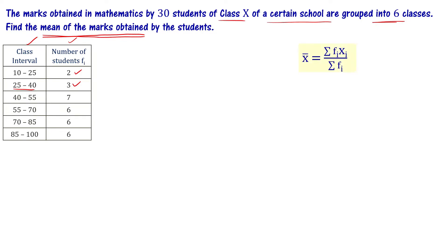Let me quickly recall the direct method. The mean formula is x̄ = Σfixi / Σfi. For each class interval, xi is the class mark.